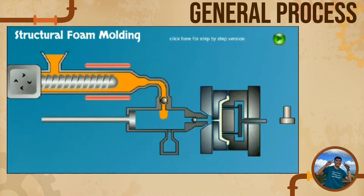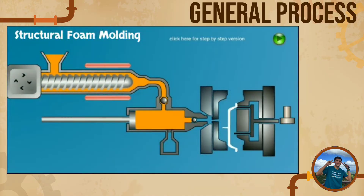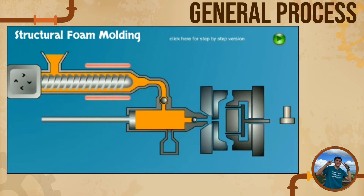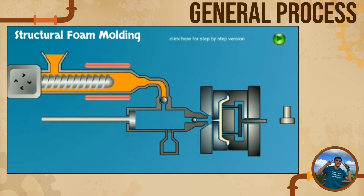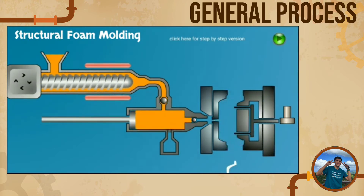The structural foam process is a low-pressure injection molding process where an inert gas is introduced into melted polymer for the purpose of reducing density and hence the weight of the finished product. Structural foam molded products have cellular cores surrounded by rigid internal skins.